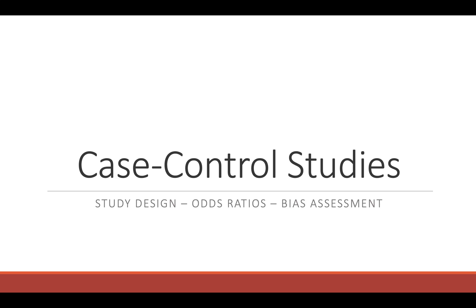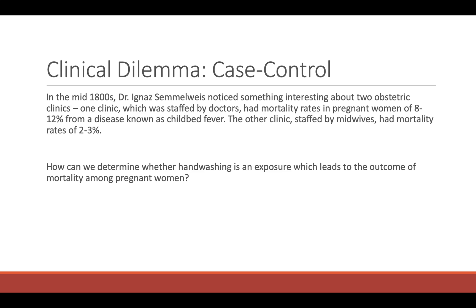The first observational study we'll cover is a case control study. In the mid-1800s, Dr. Ignaz Semmelweis noticed something interesting about two obstetric clinics. One clinic, staffed by doctors, had mortality rates in pregnant women of 8% to 12% from a disease known as childbed fever. The other clinic, staffed by midwives, had a mortality rate of only 2% to 3%. So how can we use a case control study to look at whether hand washing is associated with mortality?